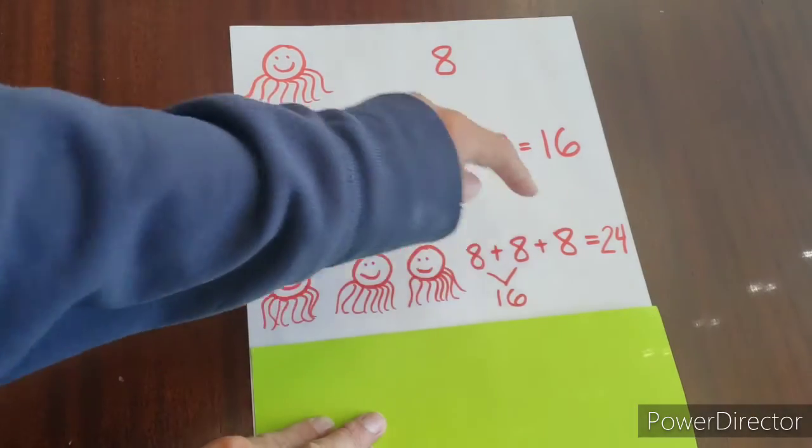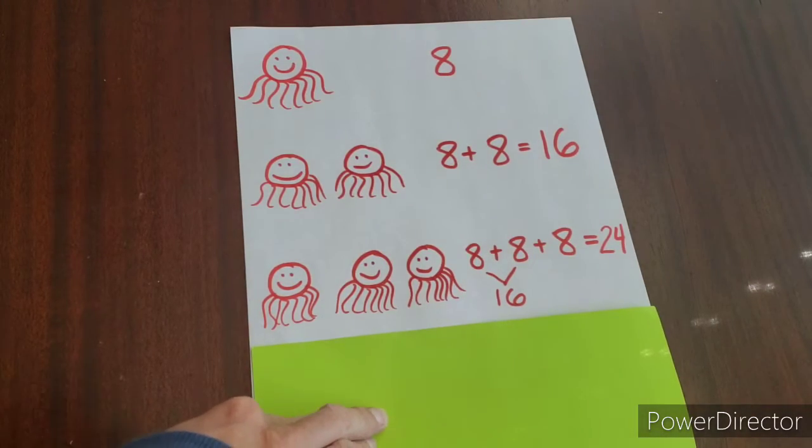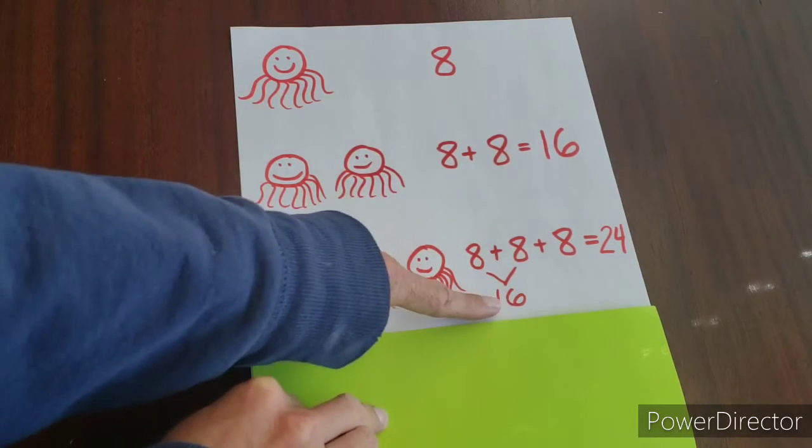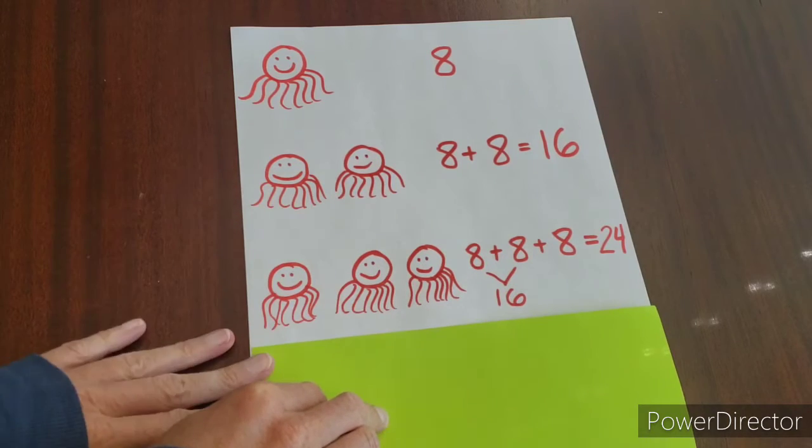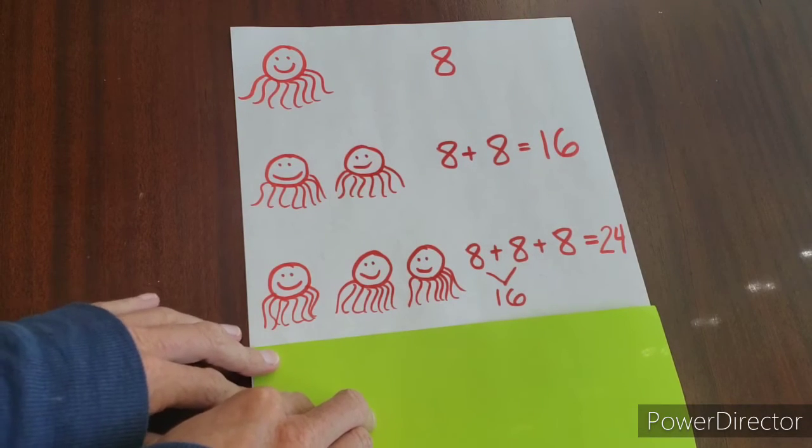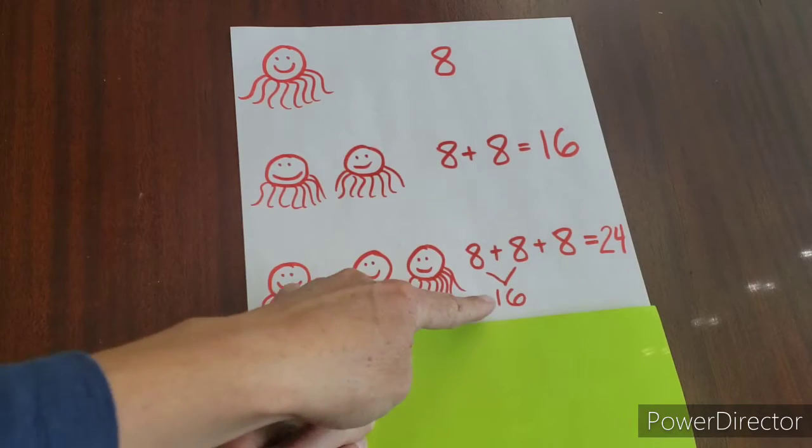So then you can work to solve and say, well, what's 16 plus eight? Okay, so something that we know how to do is to count on. So what you can do is you can say, okay, 16 plus eight, and you're going to count on.